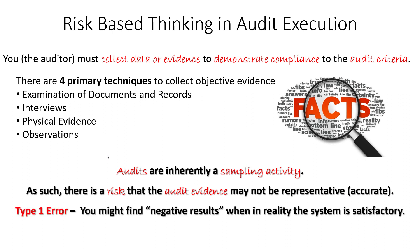There are two types of errors we can make, analogous to acceptance sampling. The first type of error is that you might come to a negative conclusion — you might find a negative result when in fact the system you're auditing is in a satisfactory condition. That's called a Type I error, analogous to producer's risk in acceptance sampling. As a result of the sampling nature of auditing, you might come to a negative conclusion about a quality system or process when in fact that system is actually satisfactory.